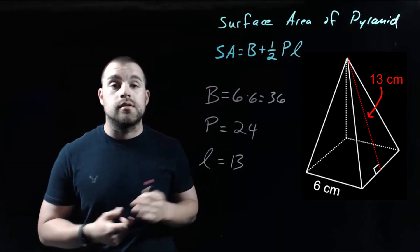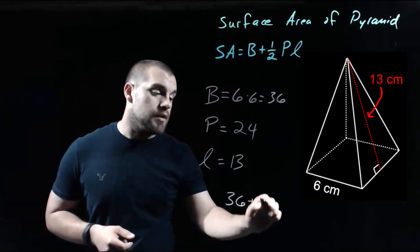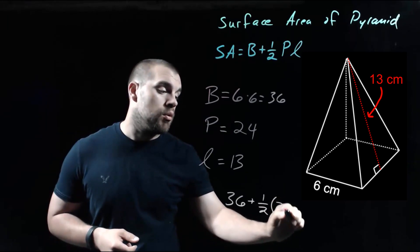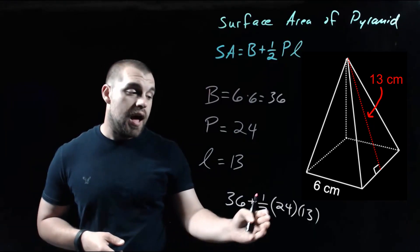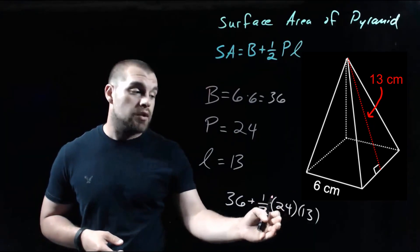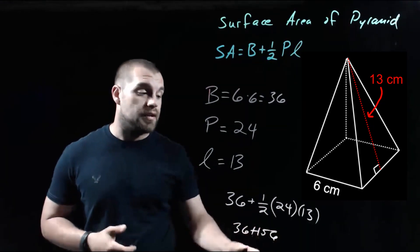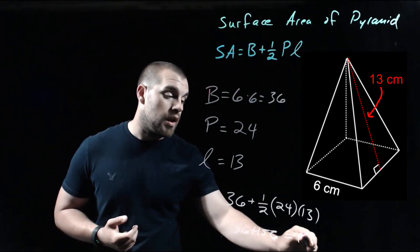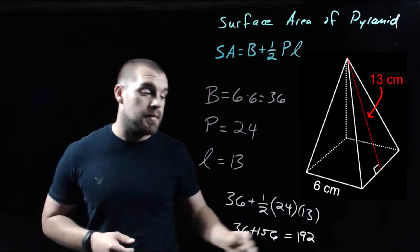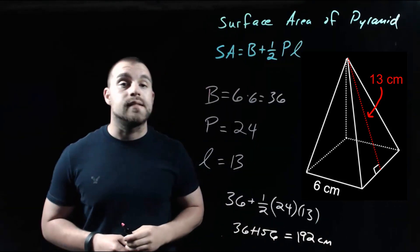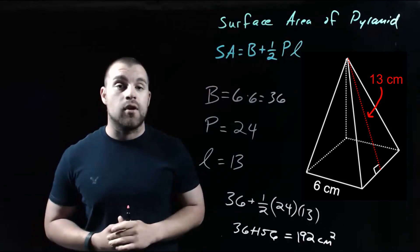So if we want to set up our formula, we start plugging these values in: 36, because that's the area of our base, plus one half times the perimeter of 24, times the slant height of 13. Half of 24 is 12, and 12 times 13 is 156. So we have 36 plus 156, which gives us 192. Our measurements were given in centimeters, and since it's an area it gets a squared label, so 192 centimeters squared is the surface area of our pyramid.